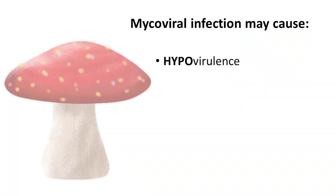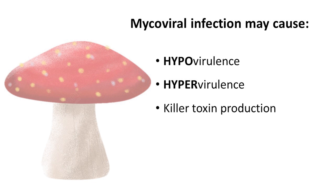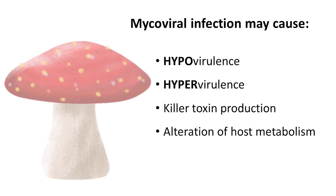But there are many examples of virus-related changes in the fungal cells that can be beneficial or detrimental to the fungus. Mycoviral infection may cause hypovirulence, hypervirulence, killer toxin production, alteration of host metabolism, and tolerance to abiotic factors.